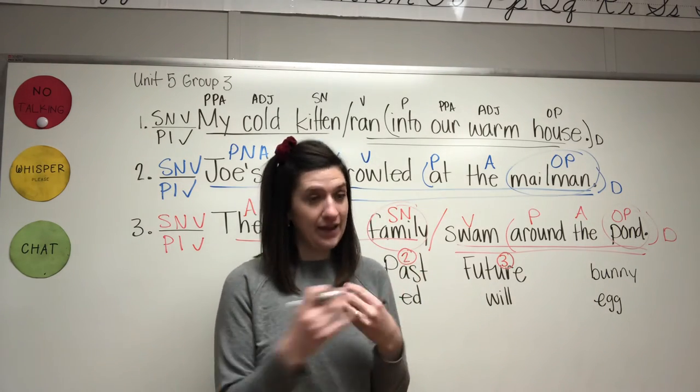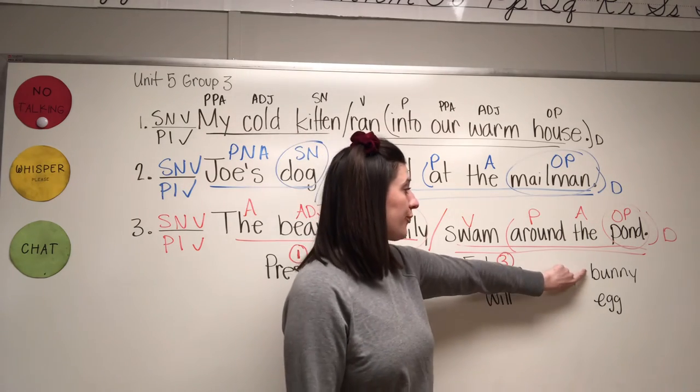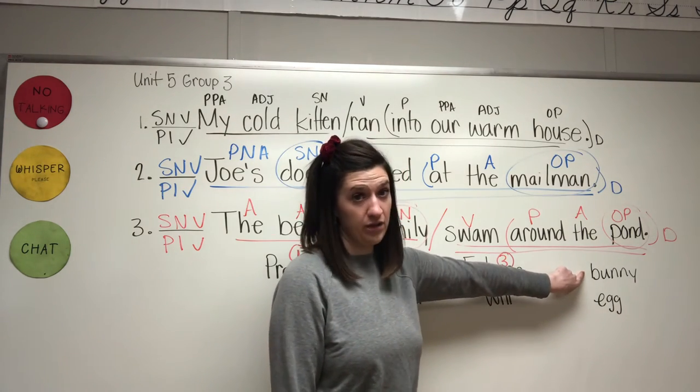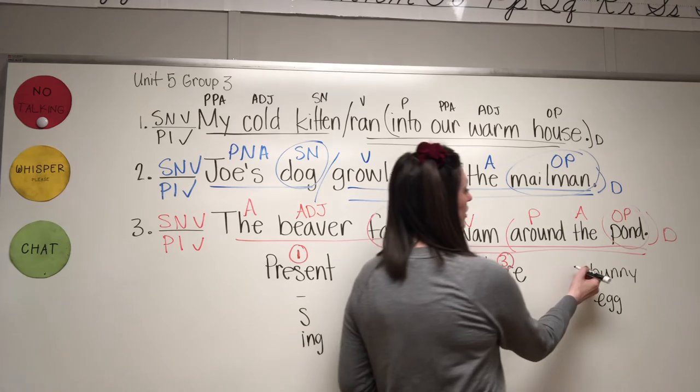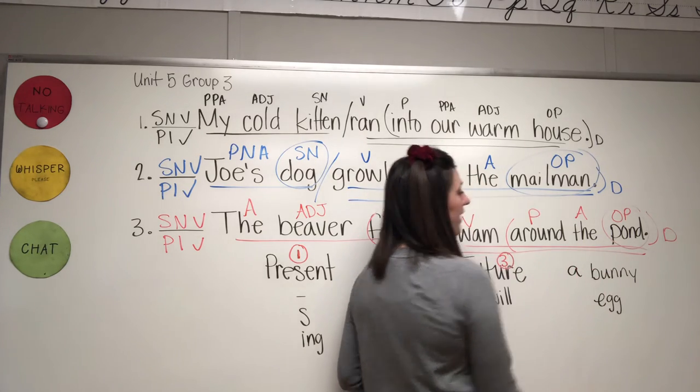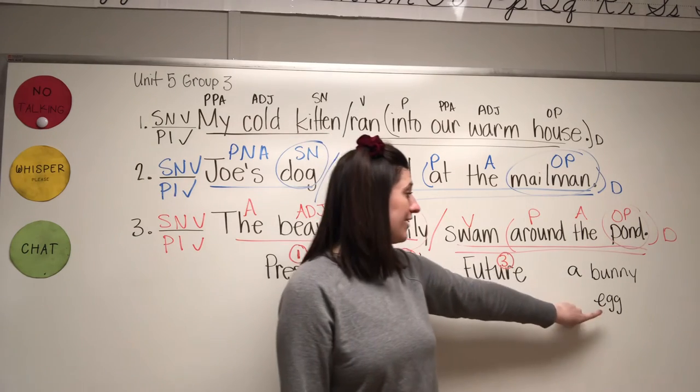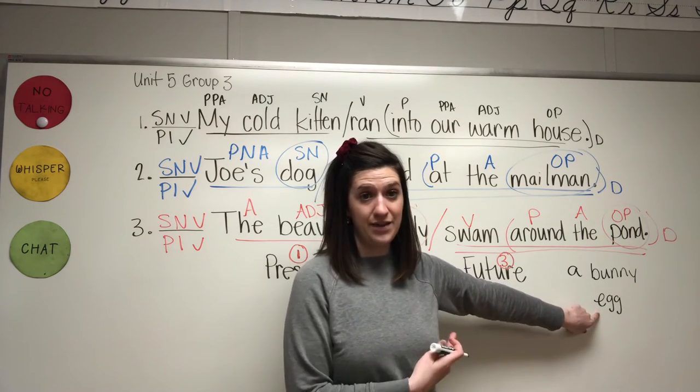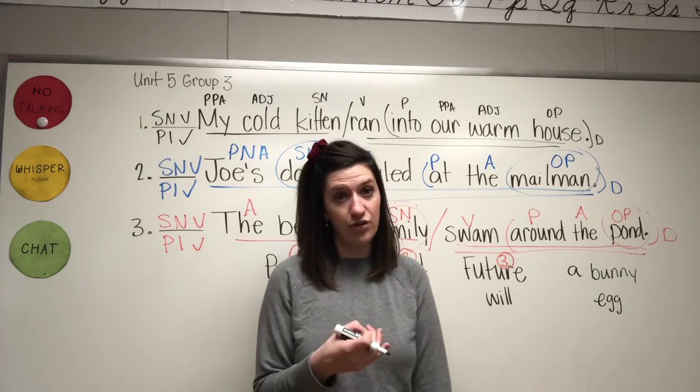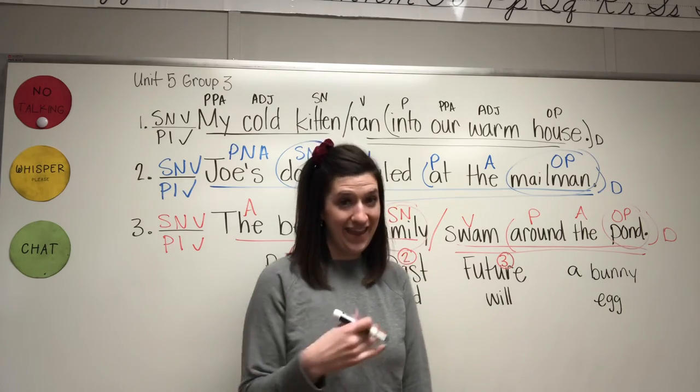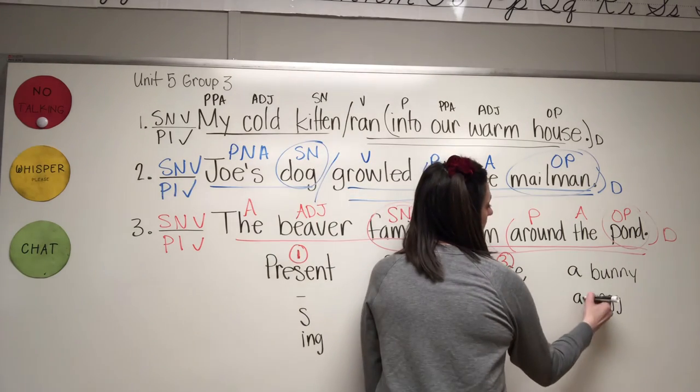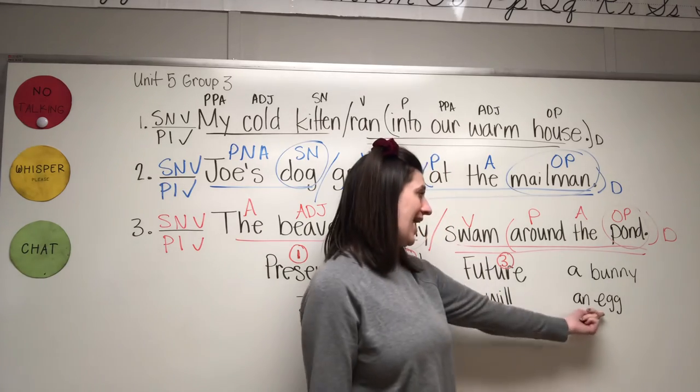If this word starts with a consonant like bunny does, then you can use article adjective a. But if your word starts with a vowel like egg does, then you have to use the article adjective an, an egg.